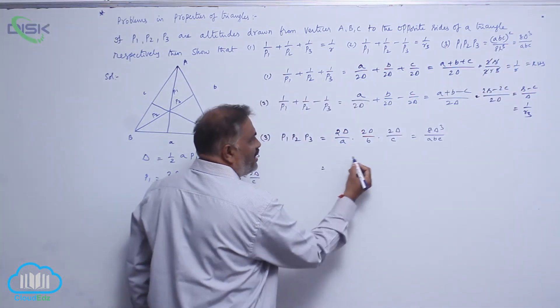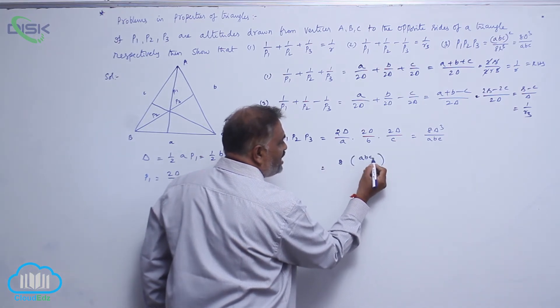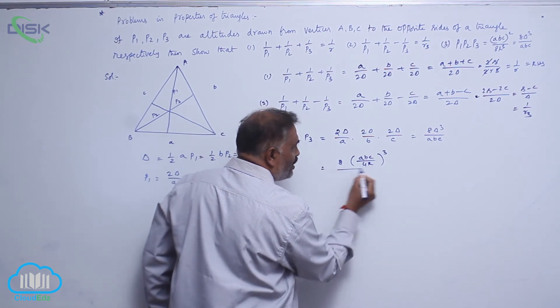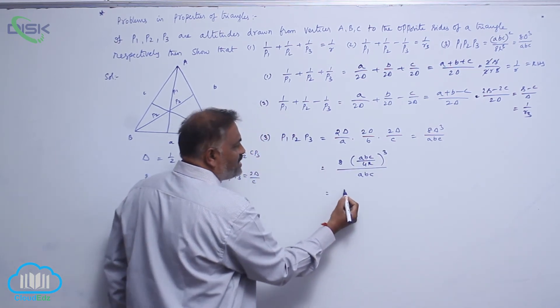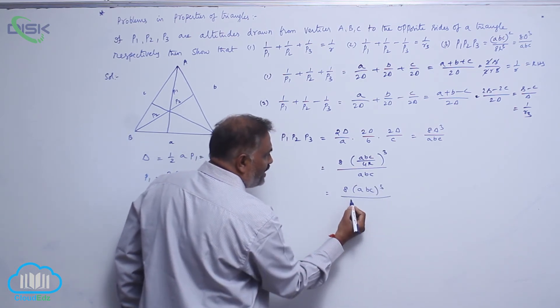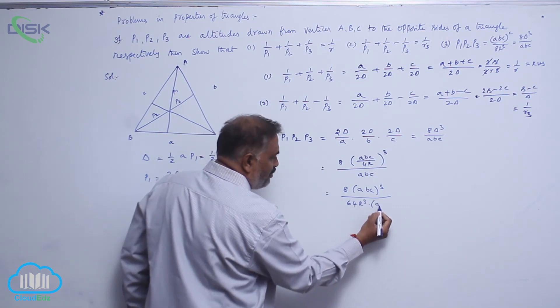Now observe here: delta means ABC by 4 capital R. This is the whole cube divided by ABC. Now, this is 8 into ABC whole cube by 64 R cube into ABC.